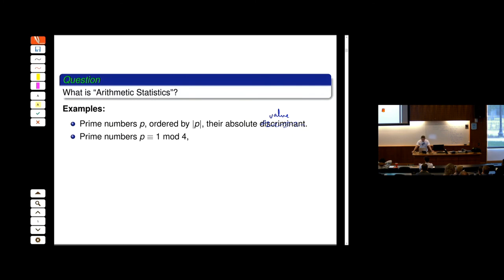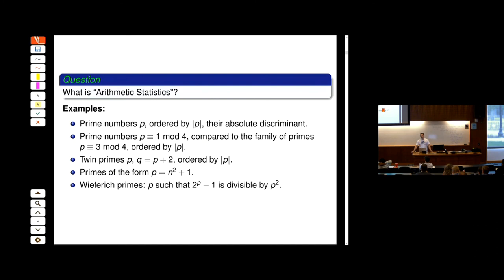We want to know about prime numbers. We can order them by their absolute value, and there are families — for instance, primes that are 1 mod 4. Sometimes we want to compare with other families. The primes that are odd are either 1 or 3 mod 4, so we compare primes that are 1 mod 4 with primes that are 3 mod 4. Are there more or less? Are there infinitely many primes that are 1 mod 4, and so on.